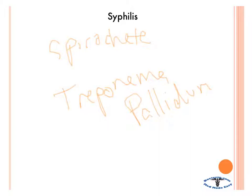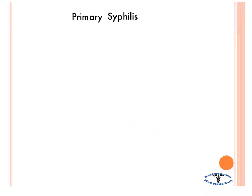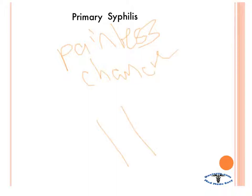Next we're going to talk a little bit about primary, secondary, tertiary, and congenital syphilis. Primary syphilis is pretty much just a painless chancre — very high yield. Most of the time you see it on the shaft of the penis. It is painless, and that is primary syphilis.